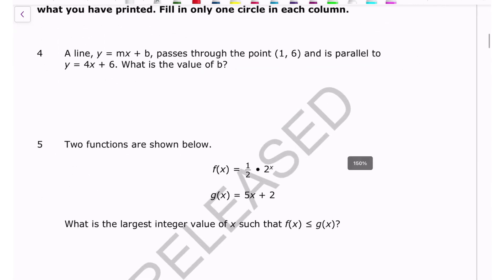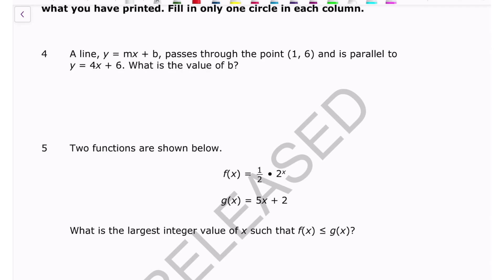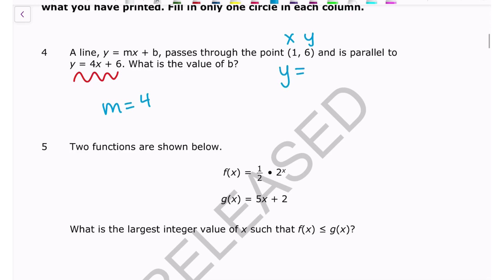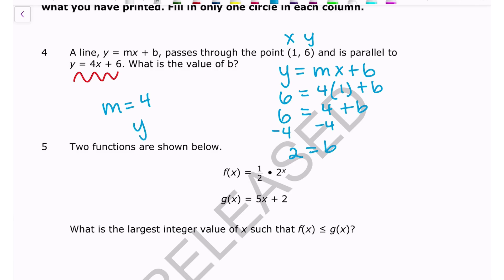Number four: we have a line in slope-intercept form y = mx + b that passes through the point (1, 6) and is parallel to a given line. Parallel means same slope, so the slope is 4. Plugging into y = mx + b: 6 = 4(1) + b. Since 4 times 1 is 4, I subtract 4 to get b = 2. The question just wants b, so the answer is 2.